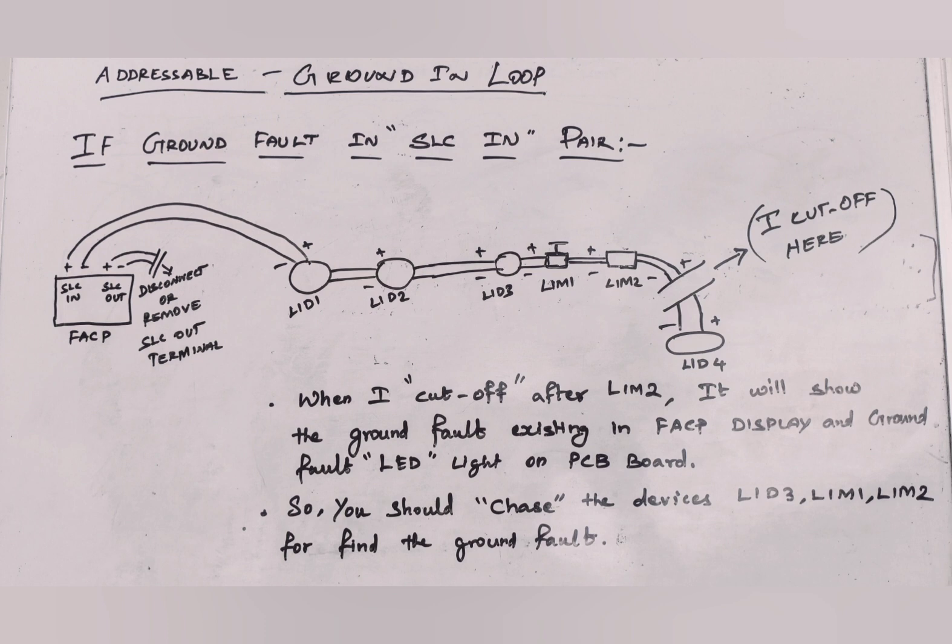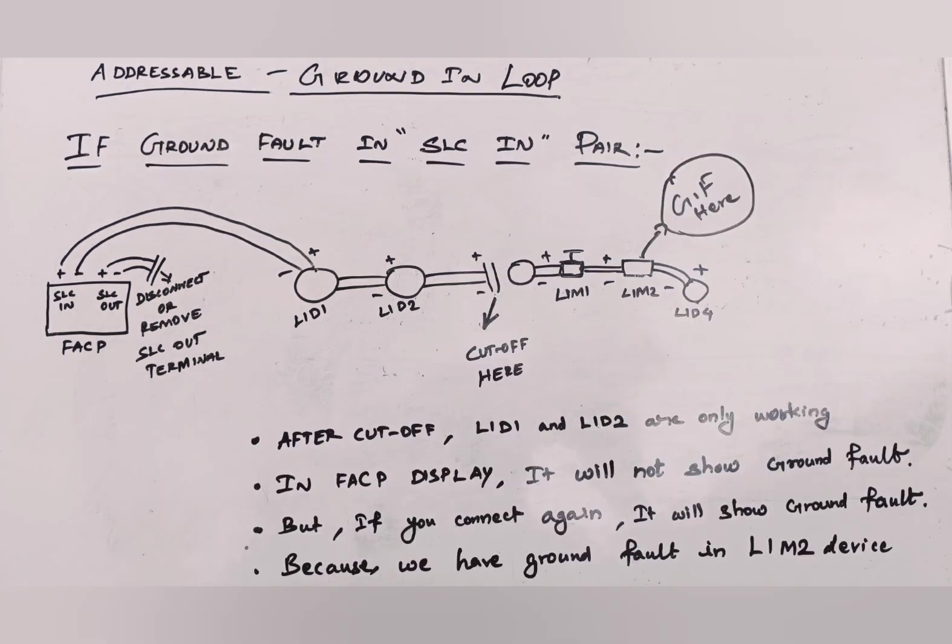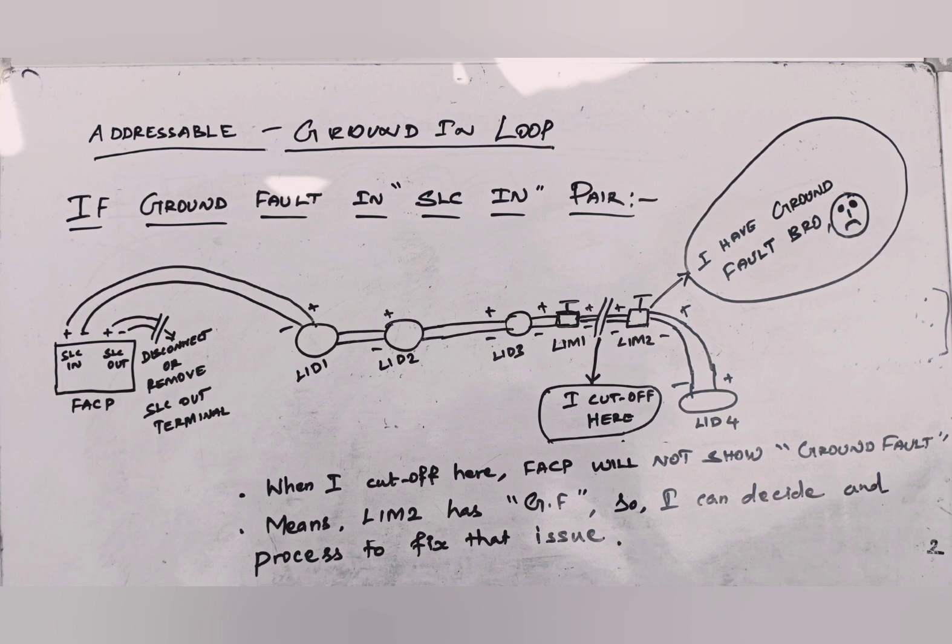When I am cutting off the continuity after L1M1, the FACP control panel will not show the ground fault, which means L1M2 is the culprit. So we need to troubleshoot over there. Maybe it has a ground fault with the back box or with conduit.